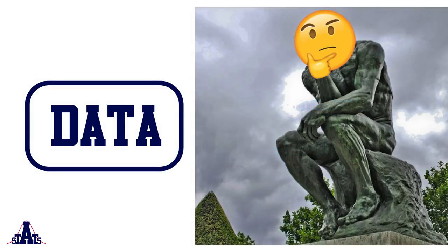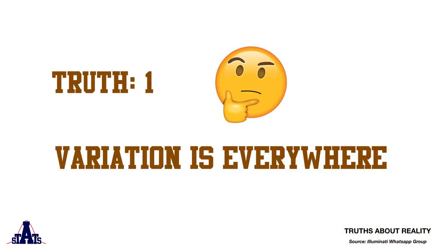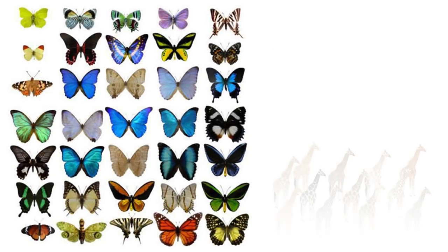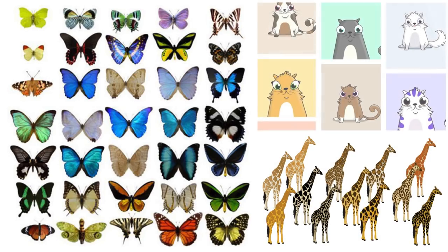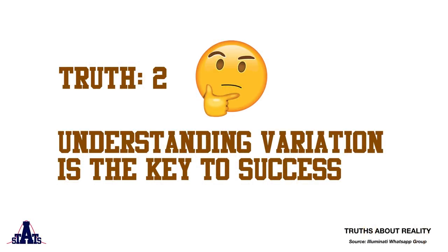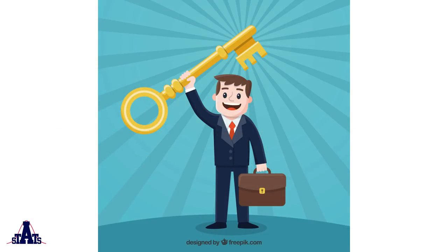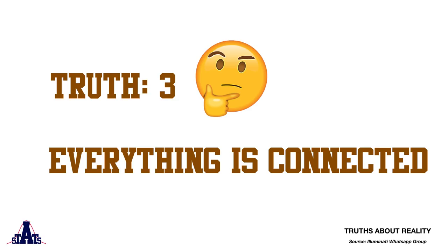What truths about reality can we extract from data? We can extract three. The first is that variation is everywhere — you just have to go outside and look at the butterflies, the giraffes, or the crypto kitties to see that variation exists. Truth number two is that if you can understand this variation, then you hold the key to success. And the third truth is that everything is connected.